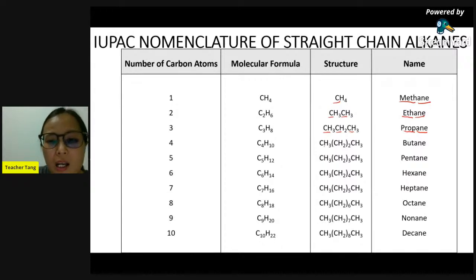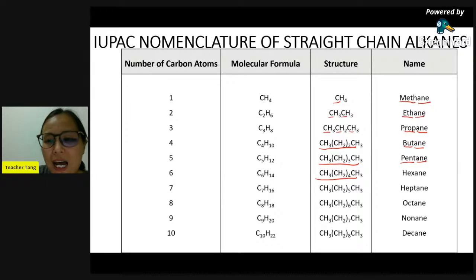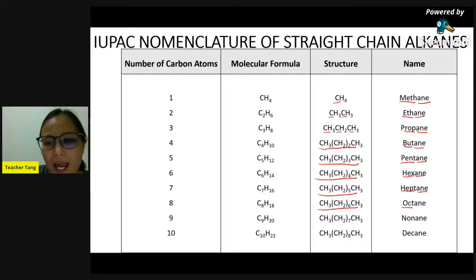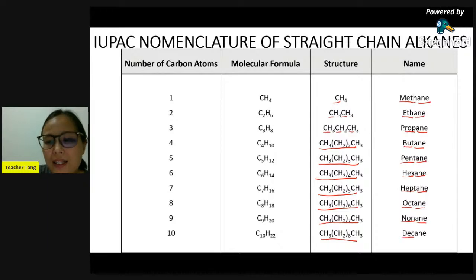Four carbon is 'but' - add '-ane', so butane. Five carbon is 'pent' - add '-ane', so pentane. Six carbon is 'hex' - add '-ane', so hexane. Seven carbon is 'hept' - add '-ane', so heptane. Eight carbon is 'oct' - add '-ane', so octane. Nine carbon is 'non' - add '-ane', so nonane. Ten carbon - remember ten like a decade - so decane. That is how we name the straight chain alkane.